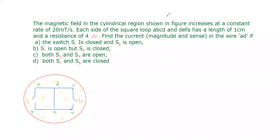Let us solve a conceptual problem in electromagnetic induction. The magnetic field in the cylindrical region shown in the figure increases at a constant rate of 20 milli-tesla per second. Each side of the square loops ABCD and ADEFA has a length of one centimeter and a resistance of 4 ohm. Find the current magnitude and direction in wire AD for four switch cases: S1 closed and S2 open; S1 open and S2 closed; both S1 and S2 open; both S1 and S2 closed.